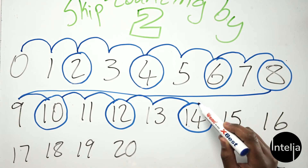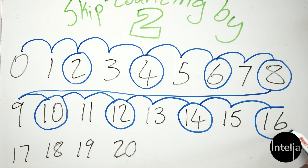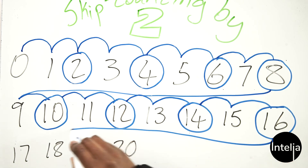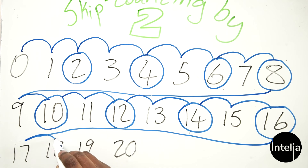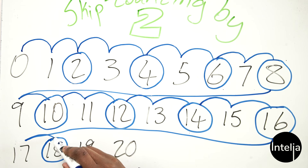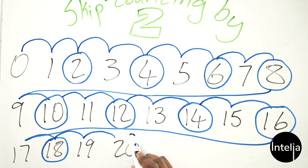Again — one and two — what number do we land on now? Fourteen. Yes! Then skip two times again — one and two — sixteen. Good. Now let's skip two times once more — one and two — what do we land on? Eighteen. Yes! One last time all the way to twenty, skip twice — one and two — twenty!